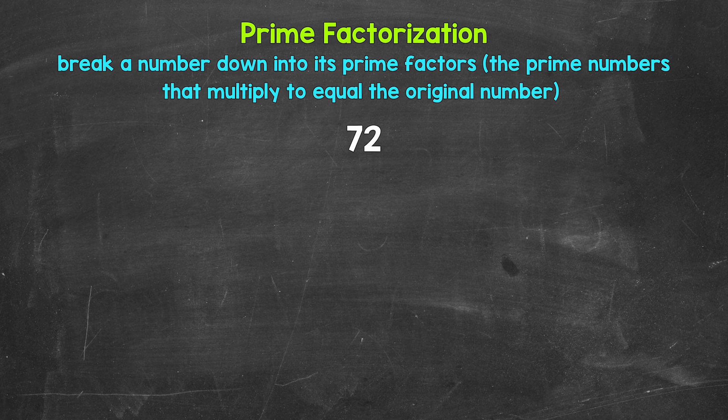Well, eight and nine are factors of 72. Eight times nine equals 72. So let's break 72 down into eight and nine.